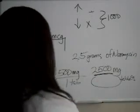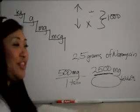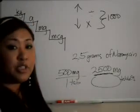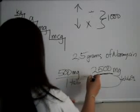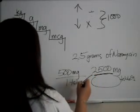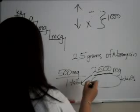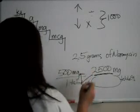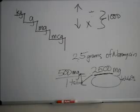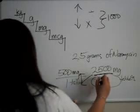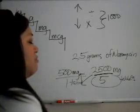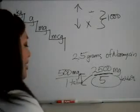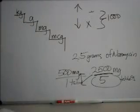Now to get the answer, because we still haven't really answered the question, they want to know how many tablets are we actually going to give the person. So I suggest you cross multiply the 2,500 to one tablet and divide by 500. And now that you do, we're just giving that patient five tablets. Just five tablets. That's all. But yes, that's the way I do math.